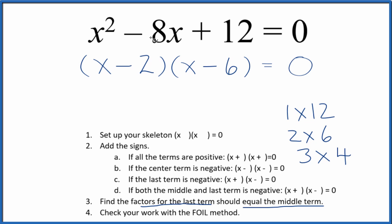We factored the equation x squared minus 8x plus 12. When we check our work with the FOIL method, multiply the first, the outside, the inside, and the last terms we get,